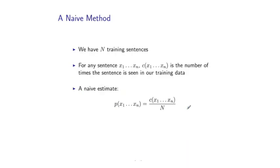Okay, finally, let's talk about a kind of very naive method for language modeling just to get us off the ground as a thought experiment. So say we have n training sentences, maybe a few million sentences from the New York Times, for example. And for any sentence, x1 up to xn, I'll just define c of x1 through xn to be the number of times that that sentence is seen in our training sample.